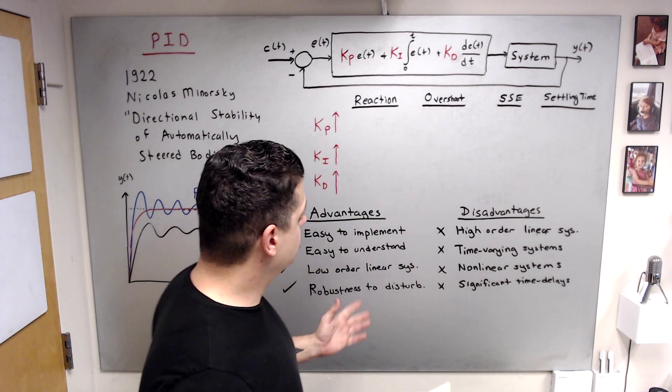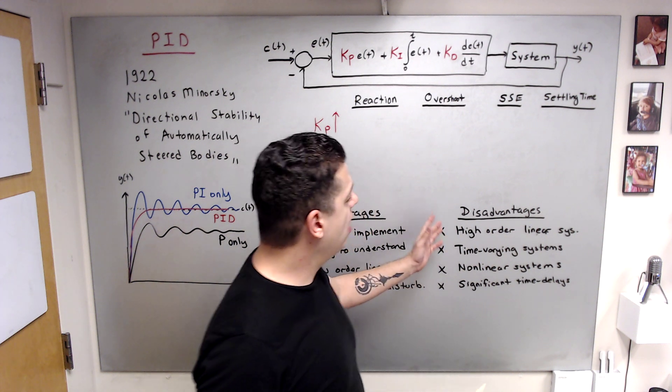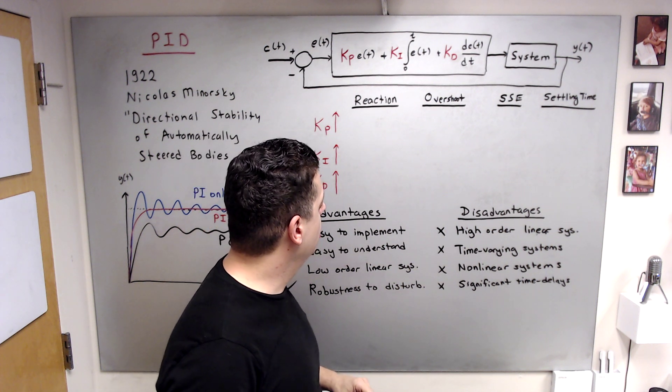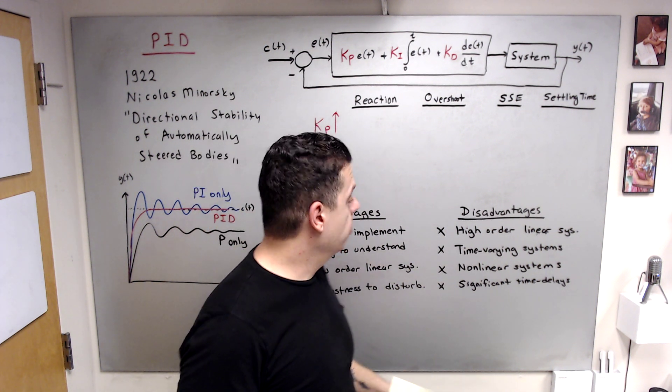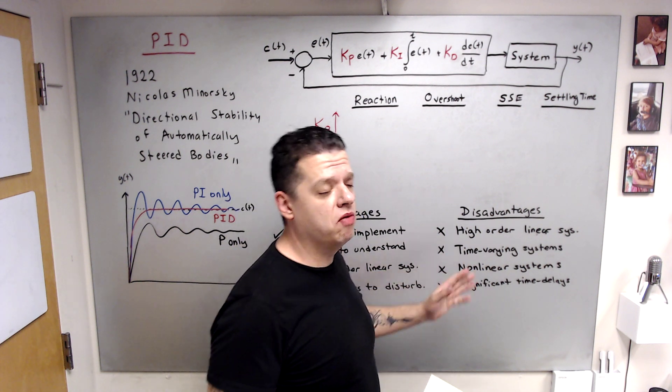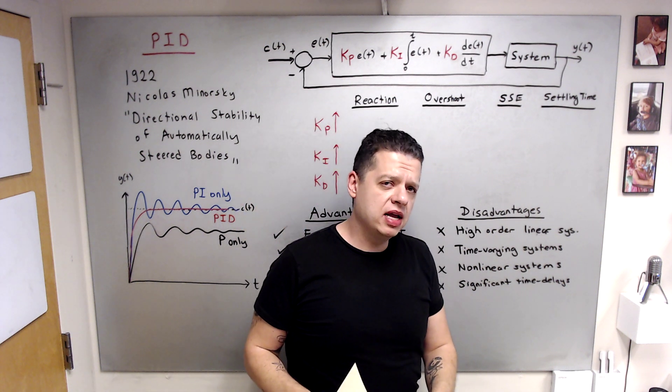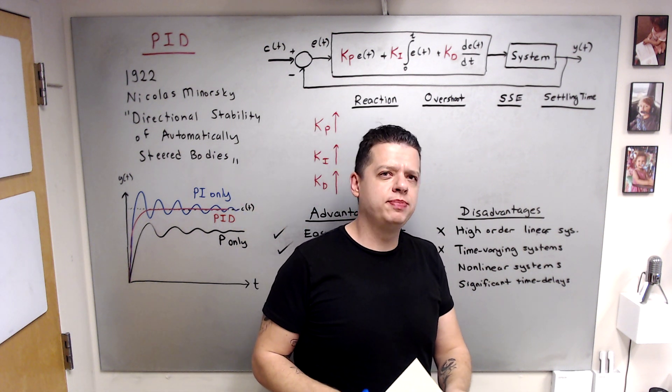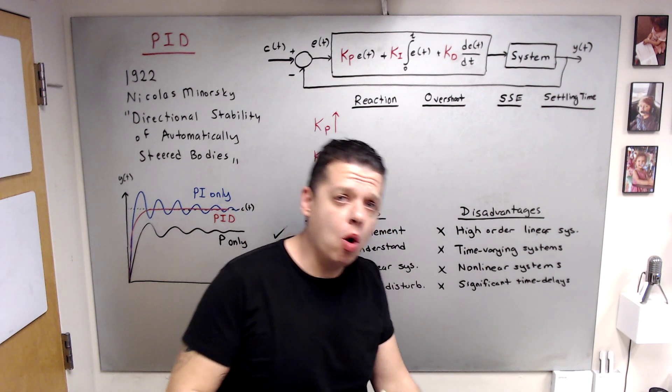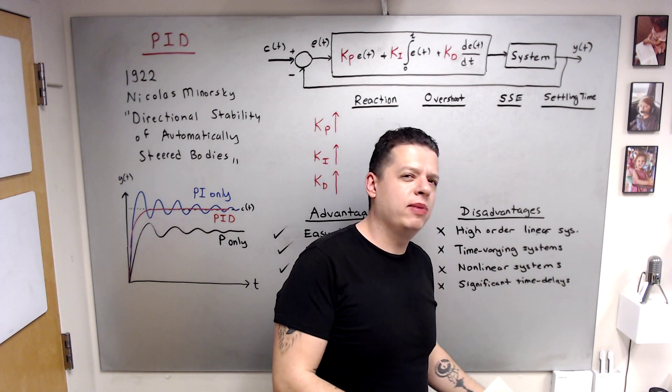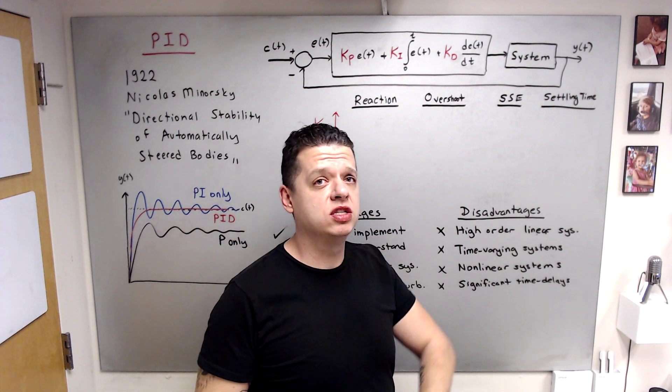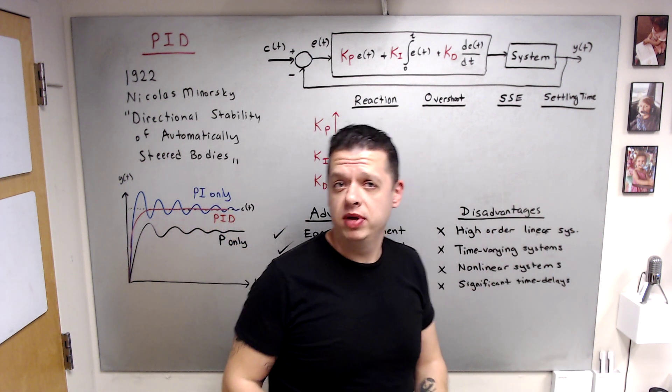Disadvantages or when should we avoid PID? If you have high order linear systems, you should use more advanced controllers. There is no guarantee that PID will work. Likewise time varying systems, likewise non-linear systems. What I mean by non-linear, if you are operating a non-linear system around a specific equilibrium point, and if this specific equilibrium point has low order linear representation, then it may work. But if you want to operate a non-linear system over its full spectrum, PID may not be the best choice.